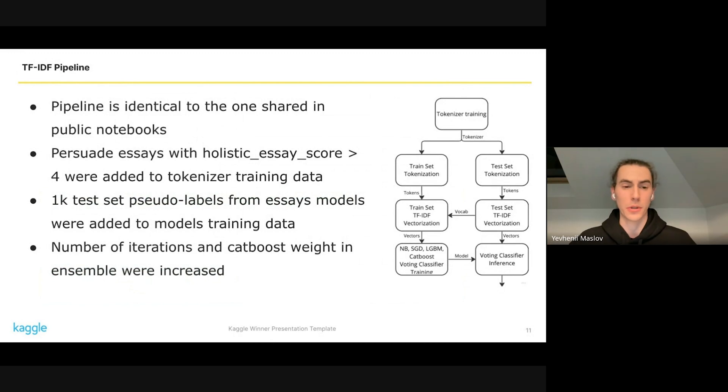The last part of our solution is TF-IDF pipeline. This pipeline is almost identical to the one in public notebooks. We only added high quality Persuade dataset to tokenizer training, added 1,000 several labels to voting classifier training, and increased number of iterations and weight for CatBoost in voting classifier.